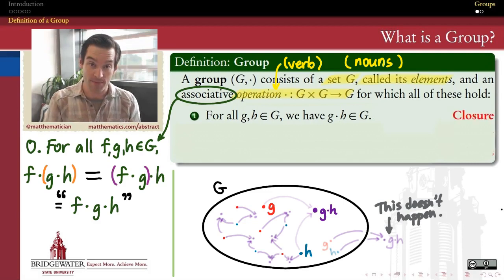We call this the closure property, and we'll say that our set of elements is closed under the action of this operation. So anytime I form gh, for g and h in the group, that product gh needs to reside within the group also.